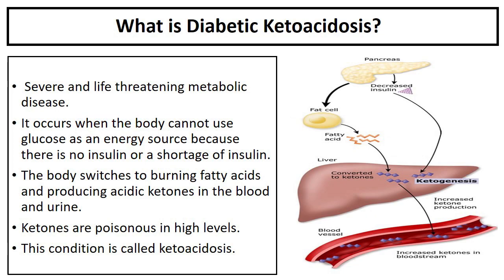What is diabetic ketoacidosis? Diabetic ketoacidosis is a severe and life-threatening metabolic disease. It occurs when the body cannot use glucose as an energy source because there is no insulin or a shortage of insulin. The body switches to burning fatty acids and producing acidic ketones in the blood and urine. Ketones are poisonous in high levels. This condition is called ketoacidosis.